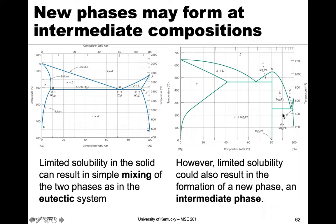Here's an example of an intermediate phase that's formed. We have alpha, which in this case is the pure phase of magnesium, and we have beta, which is the pure phase of lead, and they don't mix very well because they form mixtures. But there's also a new phase here, and this is an intermediate phase because it's intermediate to the two terminal phases — alpha and beta.